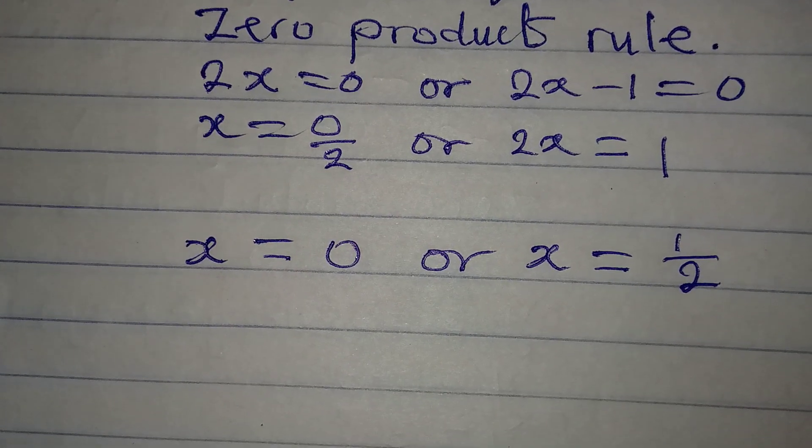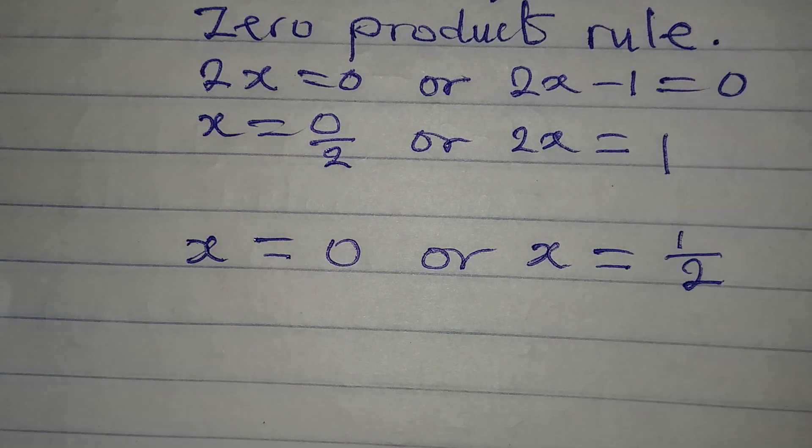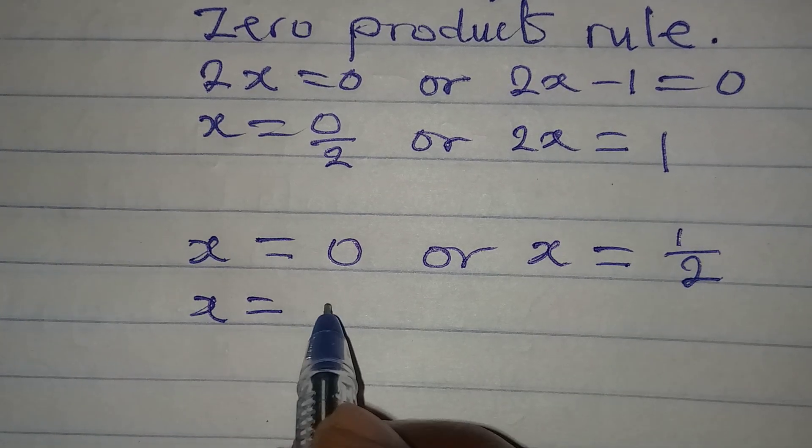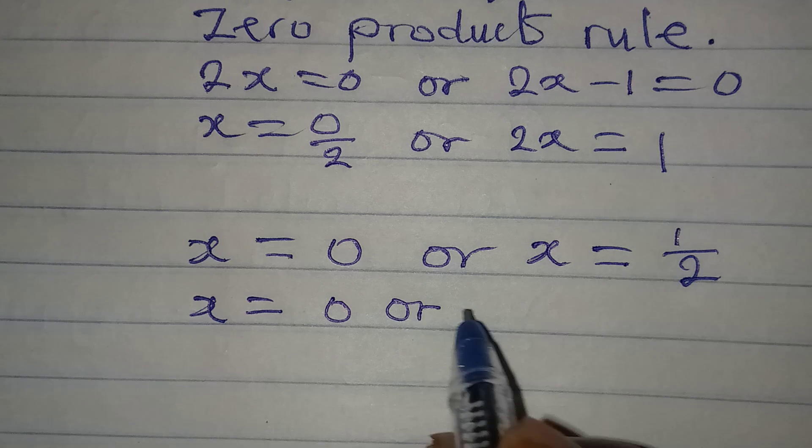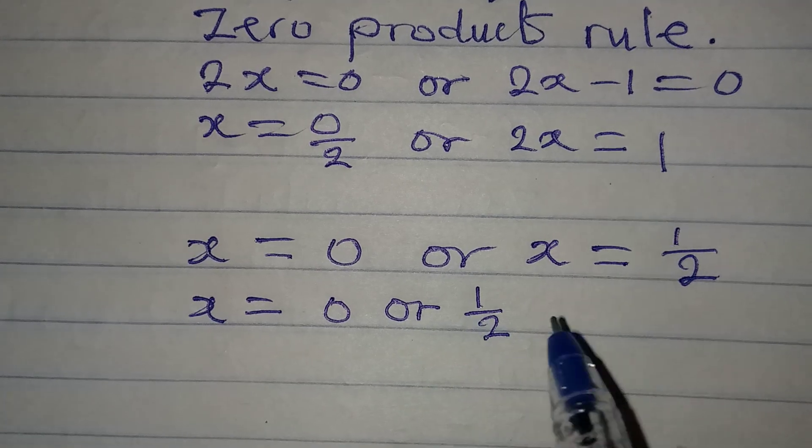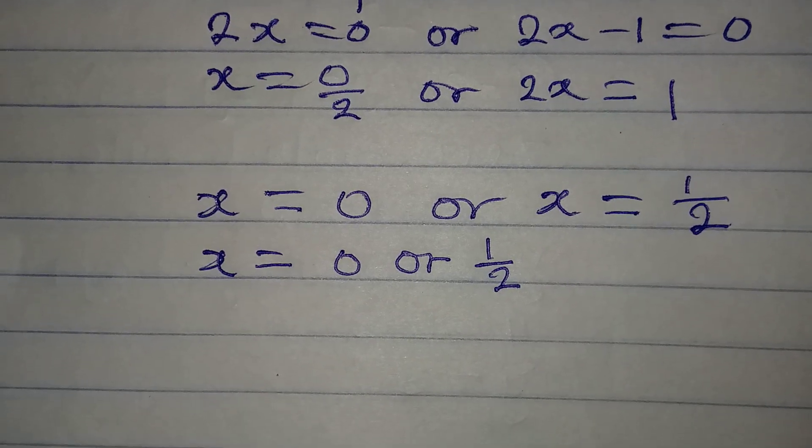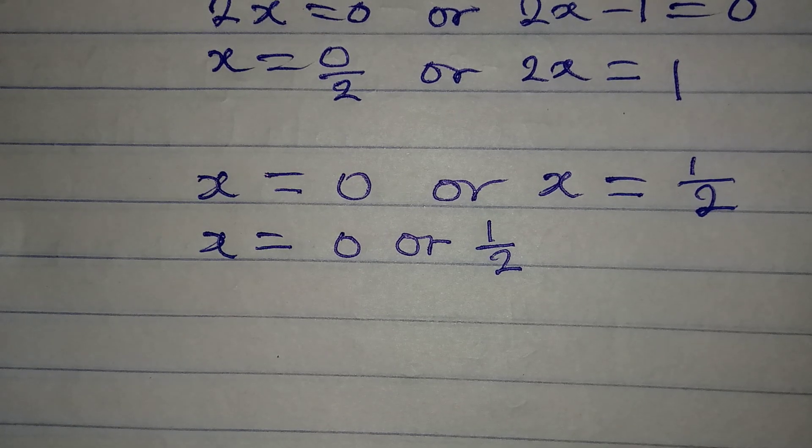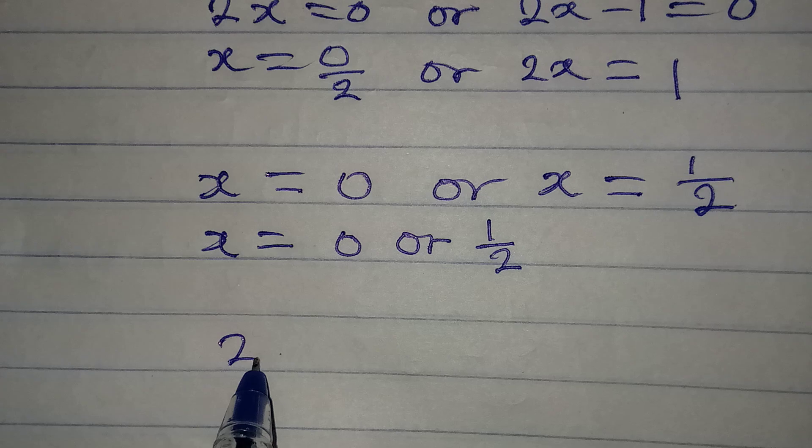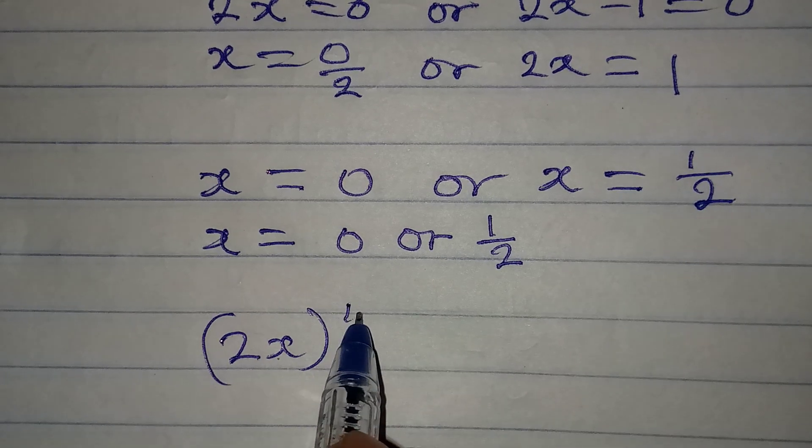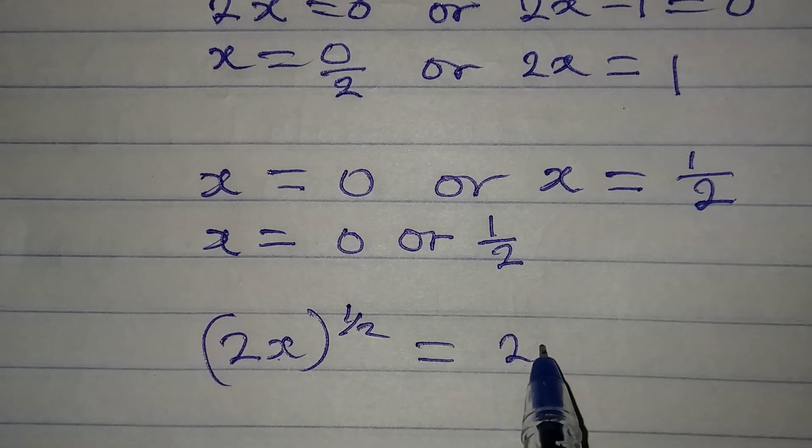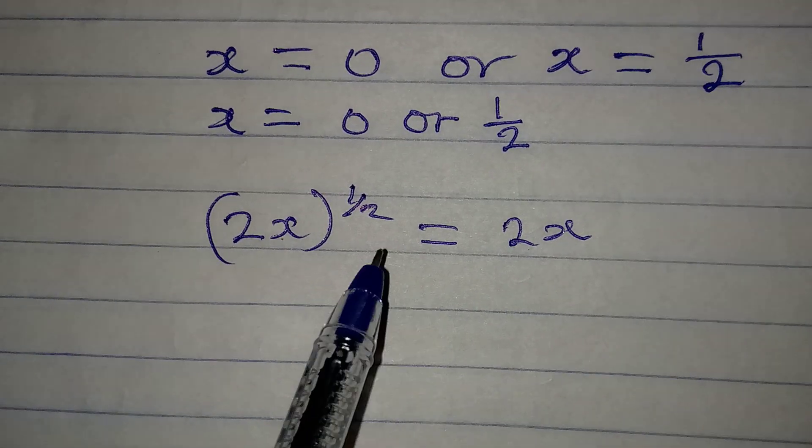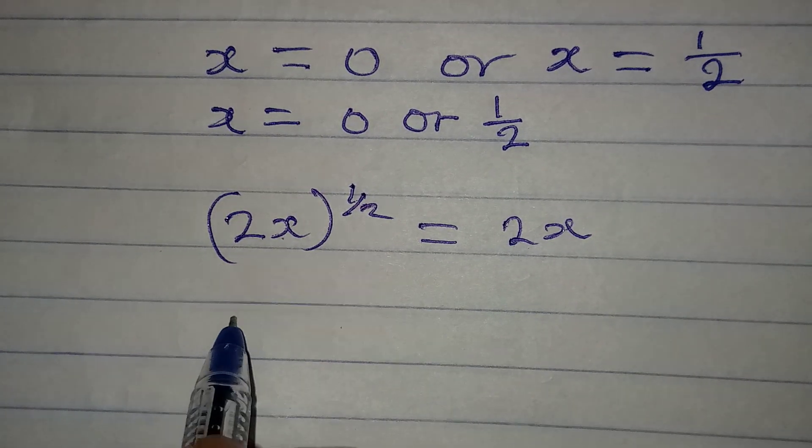Let's bring the solutions together. Our x will be equal to 0 or 1 over 2. Remember, the 1 over 2 could be 0.5. Now fix this back into the problem, because the original equation is 2x to the power of 1 over 2 equal to 2x.